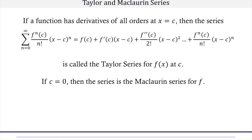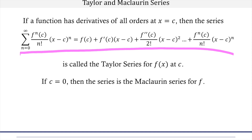Now we've already learned what a Taylor or Maclaurin series is. If a function has derivatives of all orders at x equals c, then this is called the Taylor series for f of x at c. Now if c equals zero, then that is a Maclaurin series.